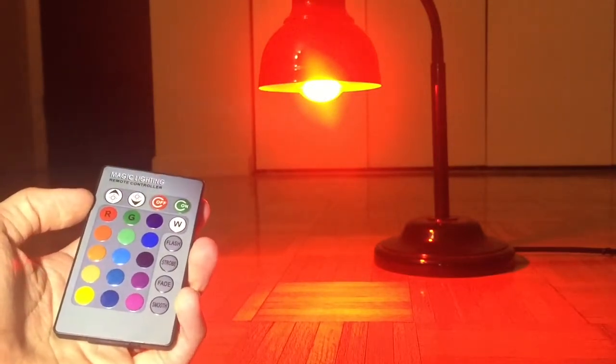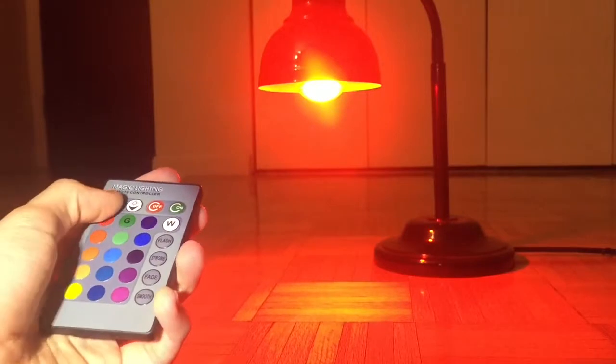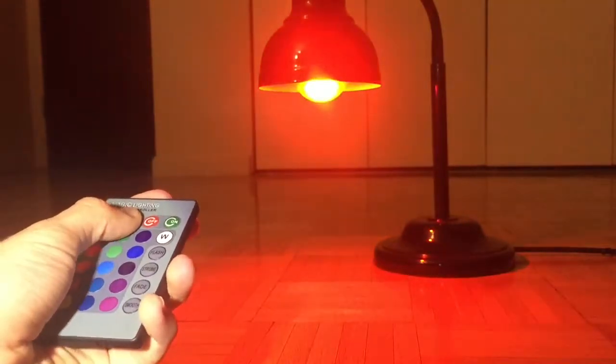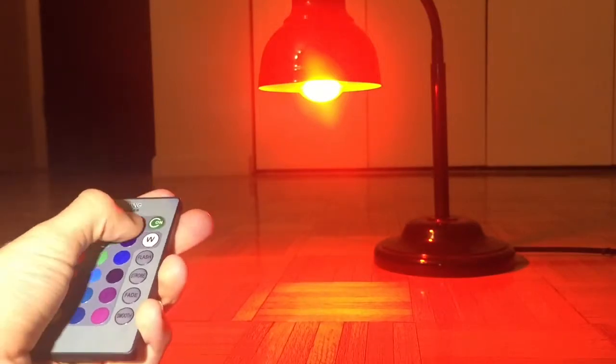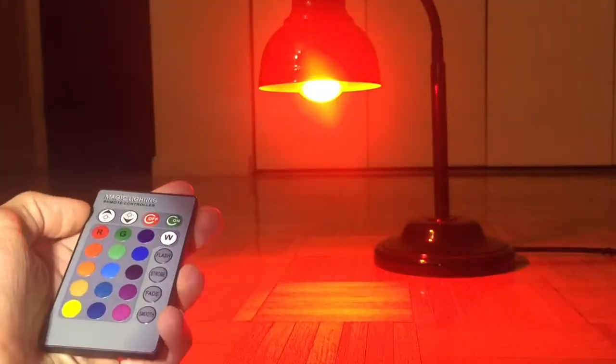First, there are 24 buttons on the remote. You can change the brightness of the light bulb by pushing the top left two buttons. You can turn it on and off just using the remote.